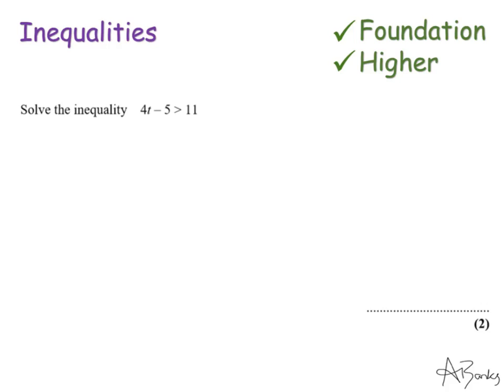Here's the last skill for foundation level on inequalities. If you're sitting higher there are other skills you'll need, but for foundation this is the last one. This question says: solve the inequality 4t minus 5 is greater than 11. If you're secure on solving equations this should be no problem, because all I'm going to do is pretend the question was 4t minus 5 equals 11 — I've just replaced the inequality symbol with an equal sign. Then I add 5 to both sides.